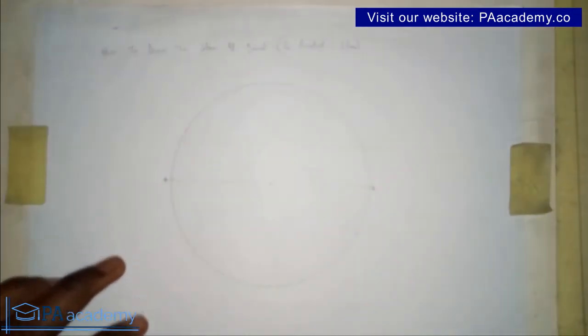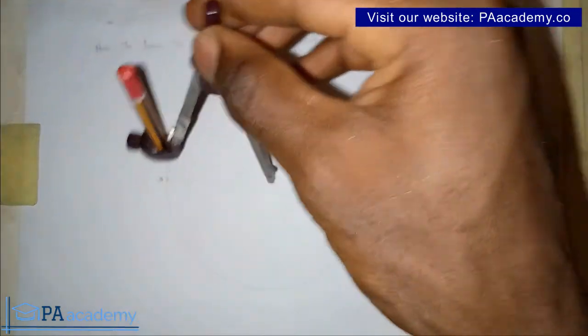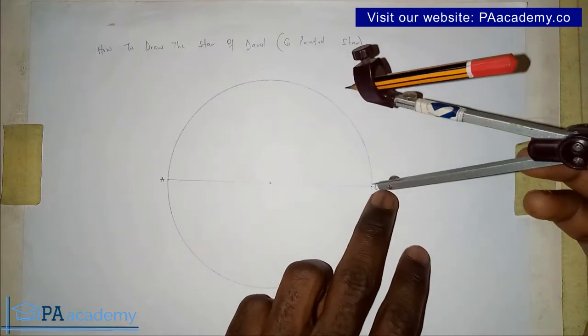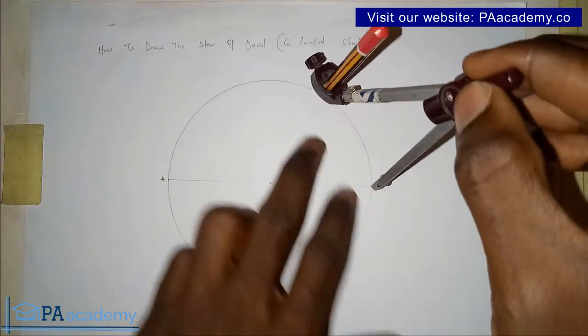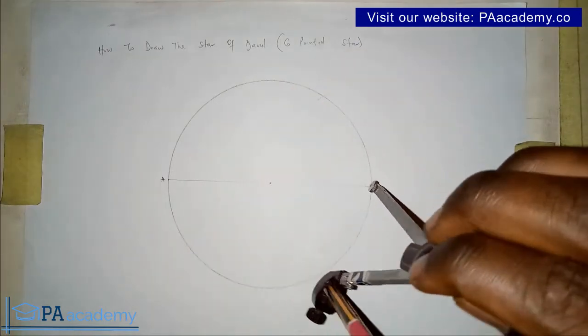Now that we've noticed those points, we bring back our compass with the same length of our radius, that means the length of the radius we used in drawing the circle. You place your compass on point B and draw an arc on the circumference of the circle. On the second half of the circle, you do the same thing.